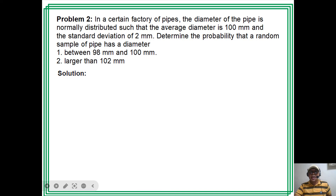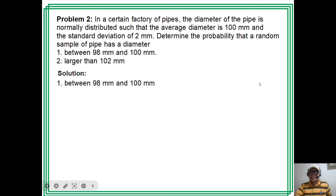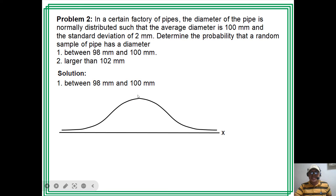This is statistics under normal distribution. The pipes produced have diameters such as 101, 102, 97, 98, and so on. The average diameter is 100 mm and the standard deviation is 2 mm. If we plot the values, they form a bell-shaped normal curve with the center at the mean value of 100. For any value of diameter, we can plot it on the x-axis.